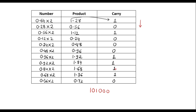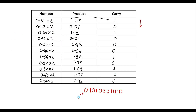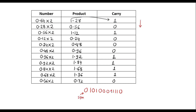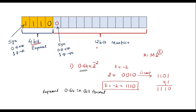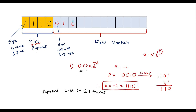Since 0.64 is a positive number, the sign bit is 0. So the full 12-bit mantissa is: 0 1 0 1 0 0 0 0 1 1 1 1. Combining the 4-bit exponent 1110 with the 12-bit mantissa gives the complete 16-bit floating point number: 1 1 1 0 | 0 1 0 1 0 0 0 0 1 1 1 1. This is the floating point representation of 0.64 × 2^(-2).